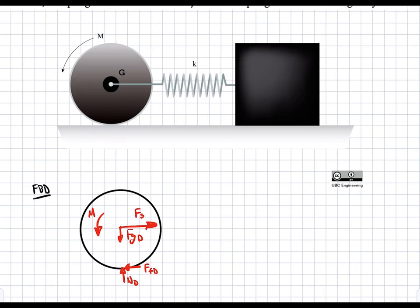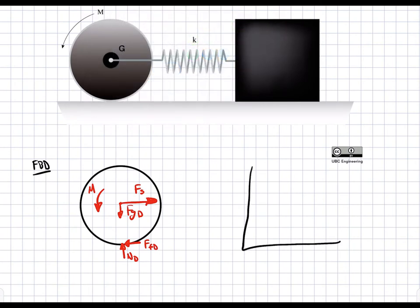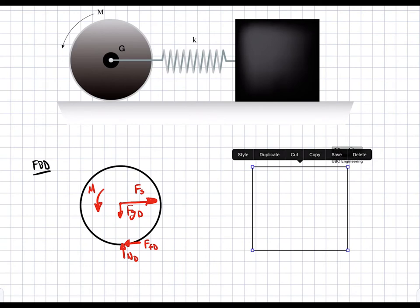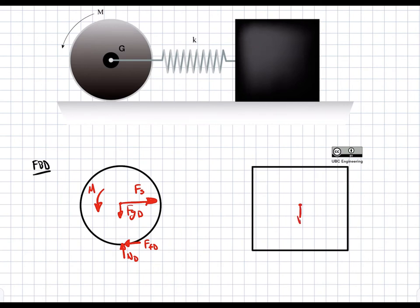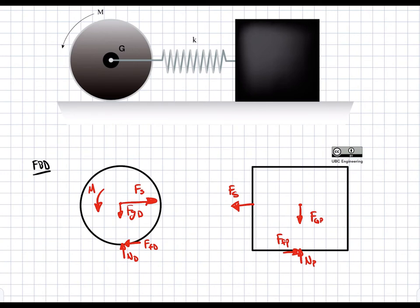For the block on the right, we have a rectangle with gravitational force FG of P, a normal force N of P pointing upward, and a friction force F_F of P pointing to the right because the block is sliding to the left. We also have the spring force pulling to the left. This has the same magnitude as F of S, because the spring carries one force and whatever force is on one side is carried by the other side.